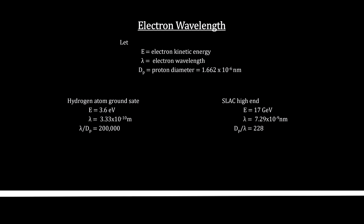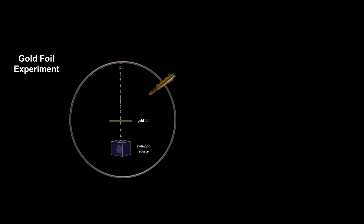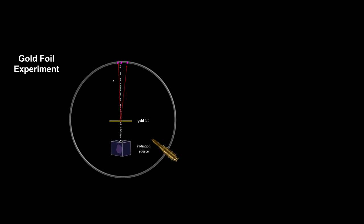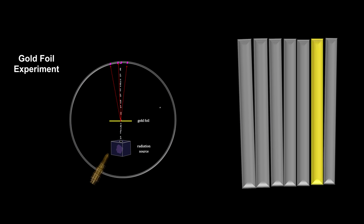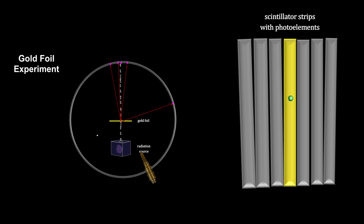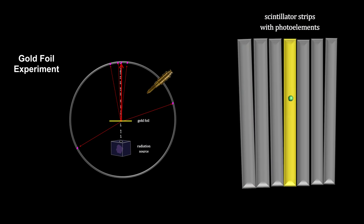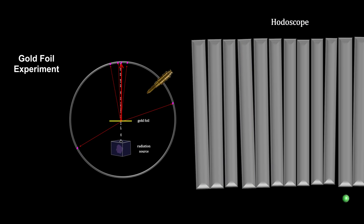SLAC accelerates electrons to greater than 99.999% of the speed of light, creating a wavelength for the electron that ranges from 2 to 200 times smaller than the proton. The scintillator screen used by Rutherford covered the inside of the apparatus; he had to manually note the flash locations. At SLAC, we partitioned the scintillator screen into small strips, each with an attached photo element that converts the flash into an electrical signal, enabling the sending of electronic location coordinates to a computer. This is called a hodoscope.